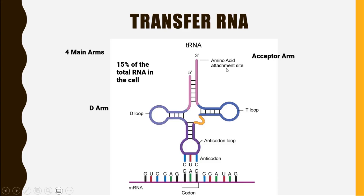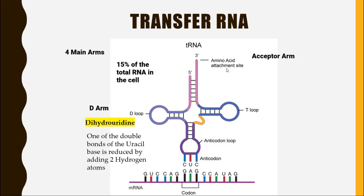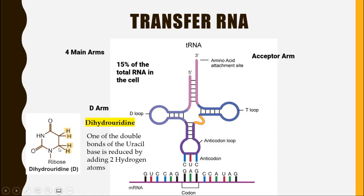The second arm is called the D-arm. It is called the D-arm because it contains a nucleotide named dihydrouridine. In this nucleotide, the nitrogenous base uracil is attached with the ribose sugar, but one of the double bonds of the uracil base is reduced by the addition of hydrogen atoms, converting it to a single bond. These types of nucleotides are present in this area, which is why this arm is called the D-arm and the loop it makes is called the D-loop.